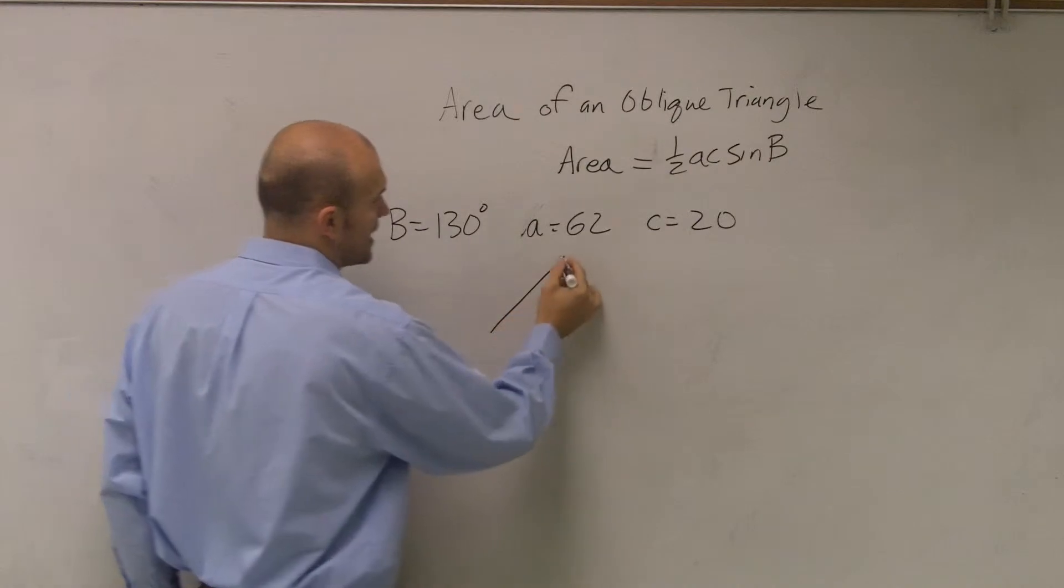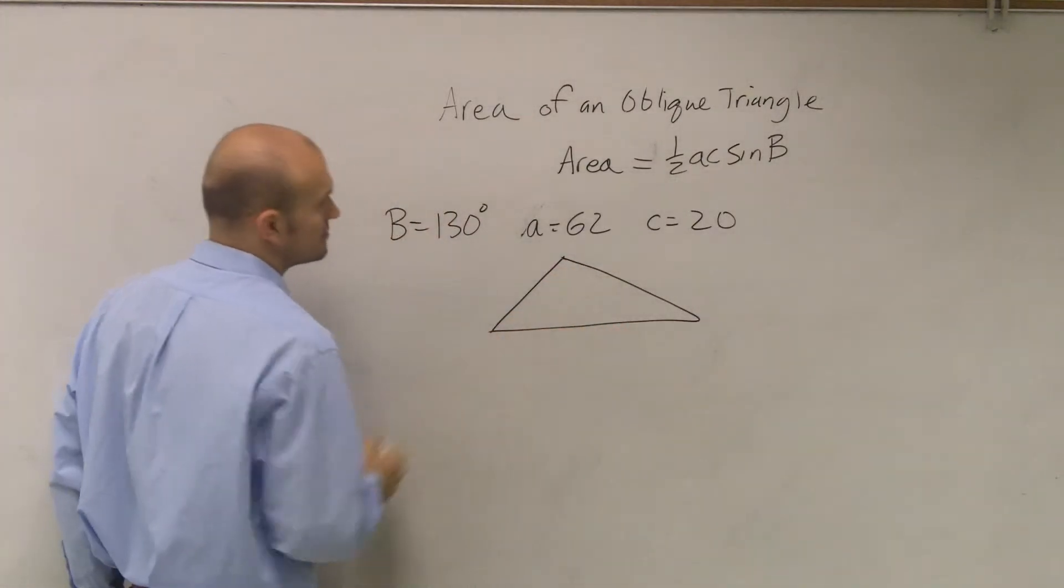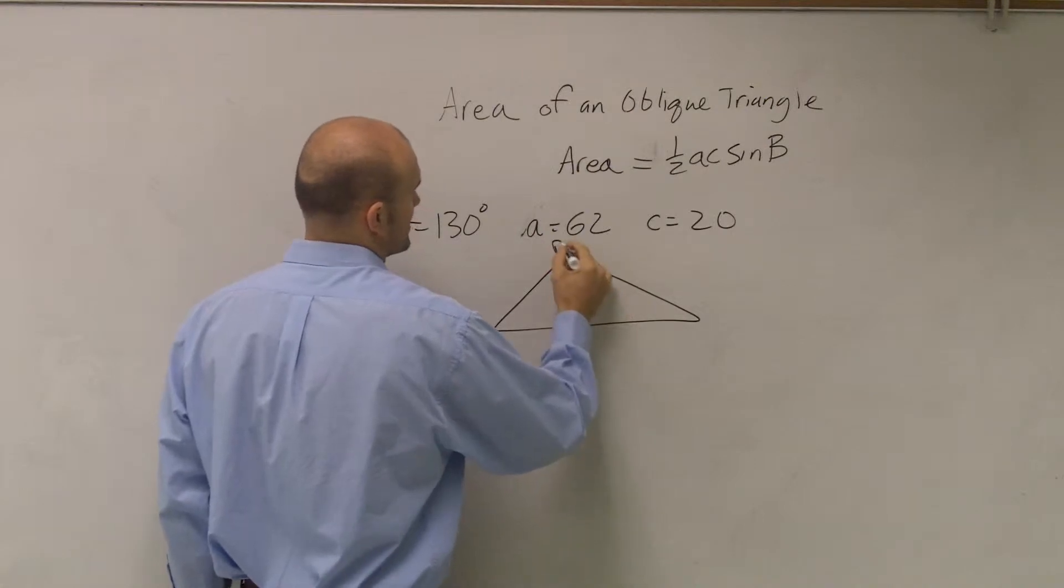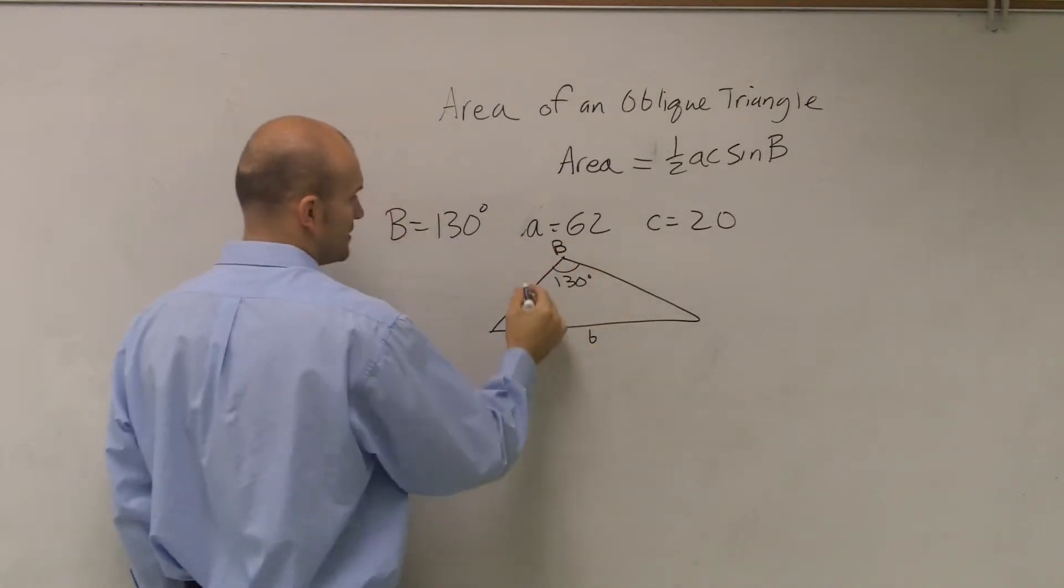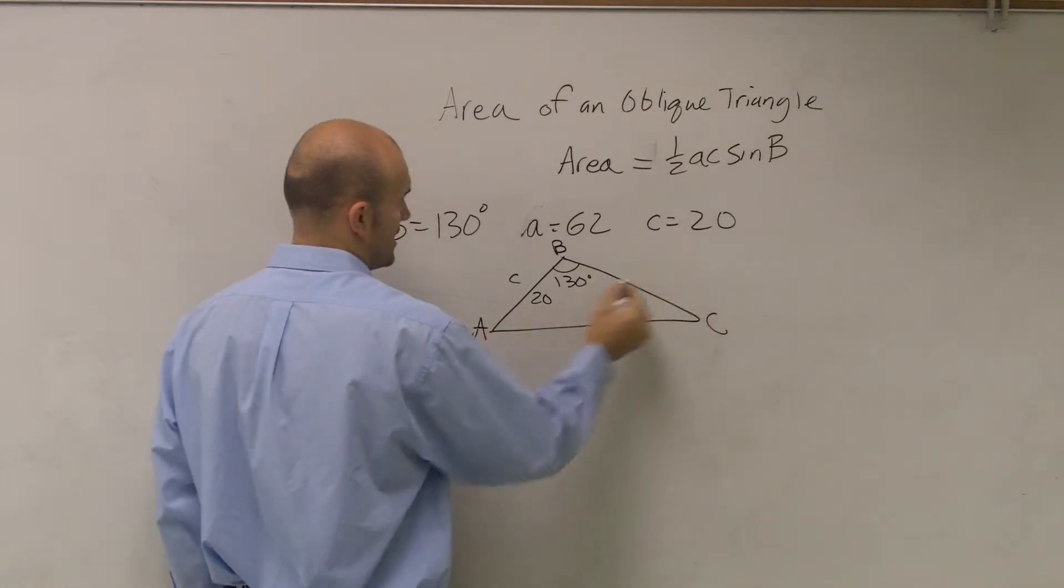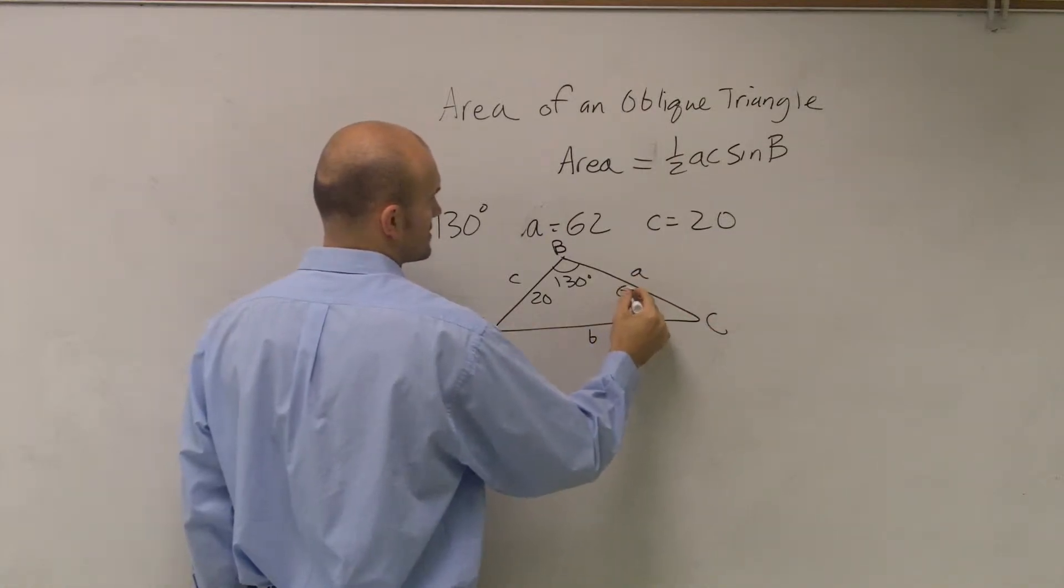It's also just kind of helpful. I always like to just draw the triangle just to make sure I know what I'm looking at. 130 degrees, that's B. That'd be little b. C, let's have this 20. Big C, A. Little a is 62.